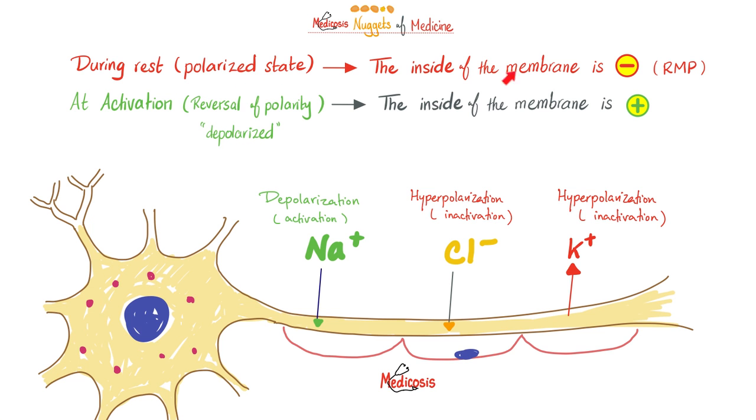Do you remember my videos on the action potential? During rest, the inside of the membrane is negative. If you want to activate it, you need to flip it from negative to positive on the inside. That's why when sodium enters, you get depolarization, which means activation. When chloride enters, it's a negative entering, you get the opposite, inactivation or hyperpolarization. If potassium leaves, let's think about that. When the positive leaves, the inside will become more negative. So I am inactivated or hyperpolarized.